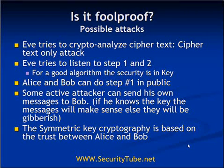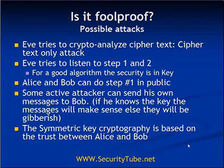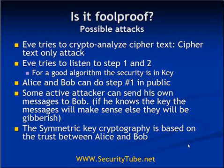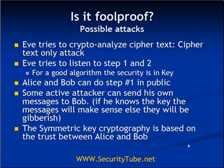A natural question is: is symmetric key cryptography foolproof? If not, what are the possible attacks? The first possible attack is a ciphertext-only attack, where Eve has full access to the ciphertext. Since Alice is sending packets over a public medium, Eve can capture all packets transferred between Alice and Bob and try cryptographic attacks on those ciphertext packets to recover either the key or the plaintext messages. If the cryptographic algorithm is weak enough, Eve will succeed.